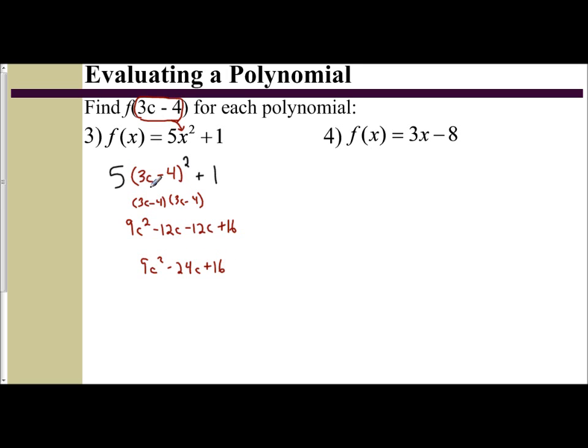That's just from squaring the binomial. So I still have the 5 on the outside and then the plus 1.